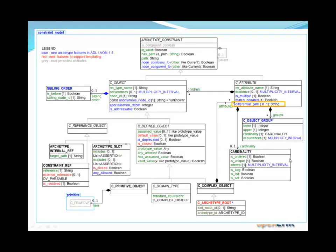You can see here the part of the AOM that is the key to enabling specializations — that is, the differential_path attribute in the C_ATTRIBUTE class. We'll see what this enables us to do.